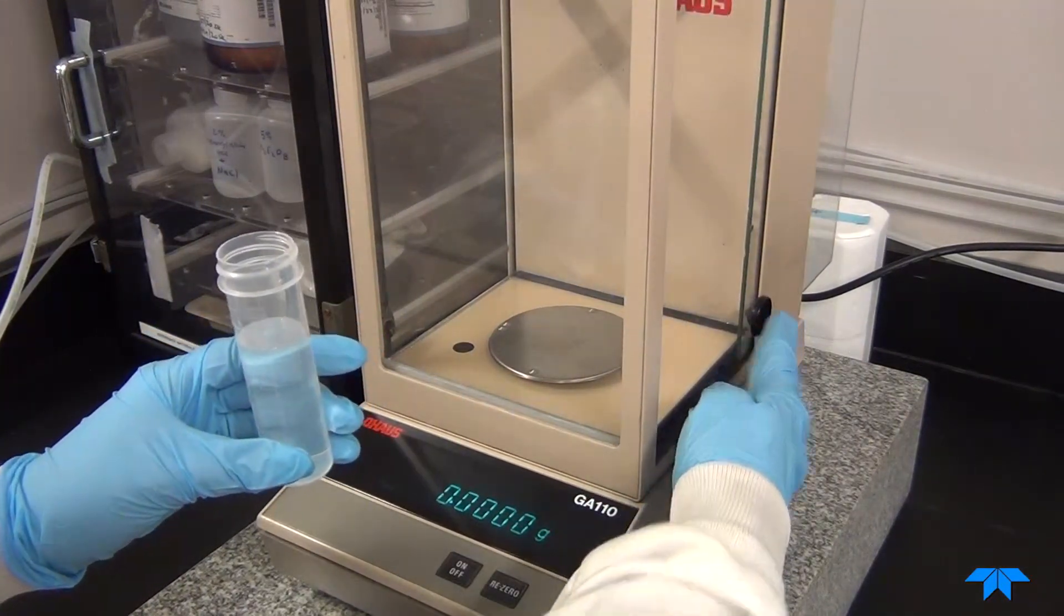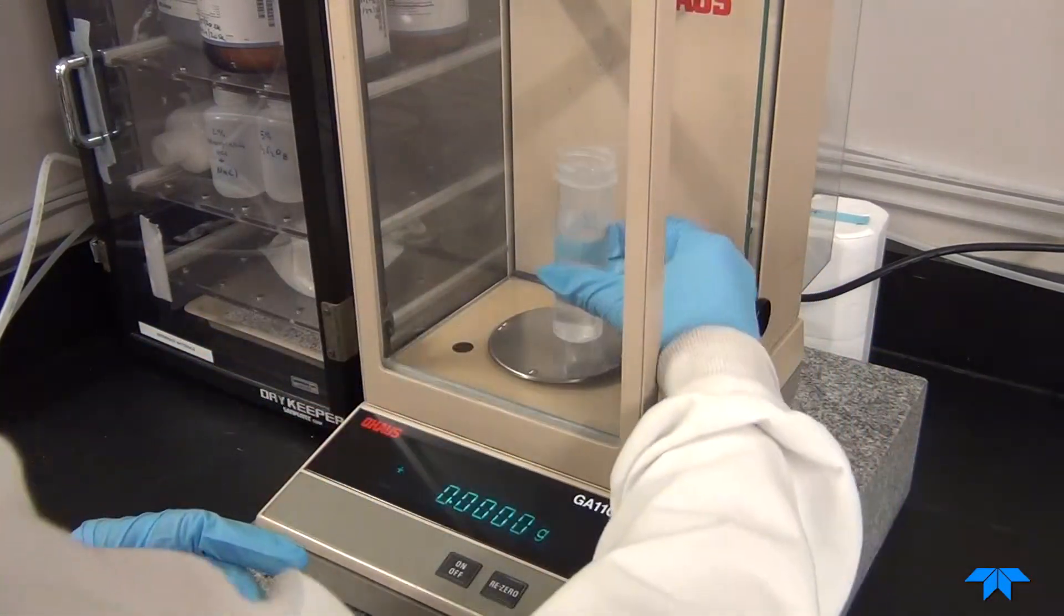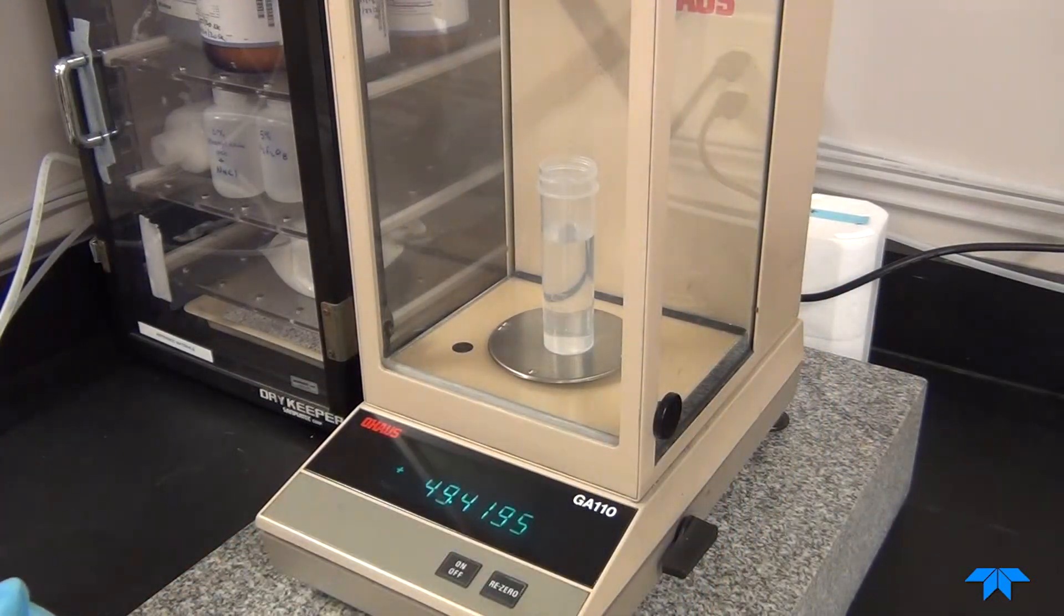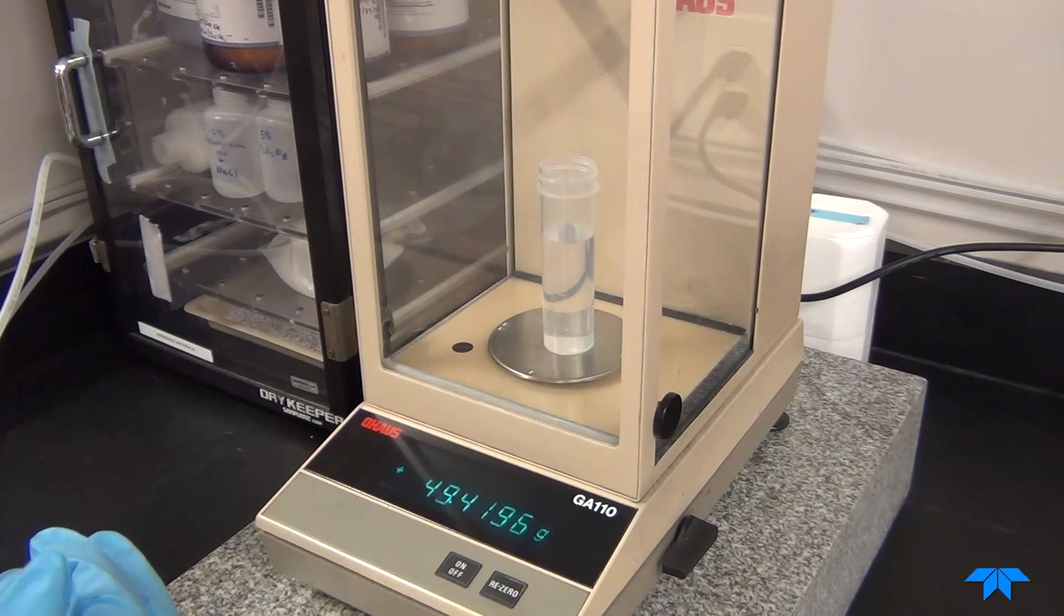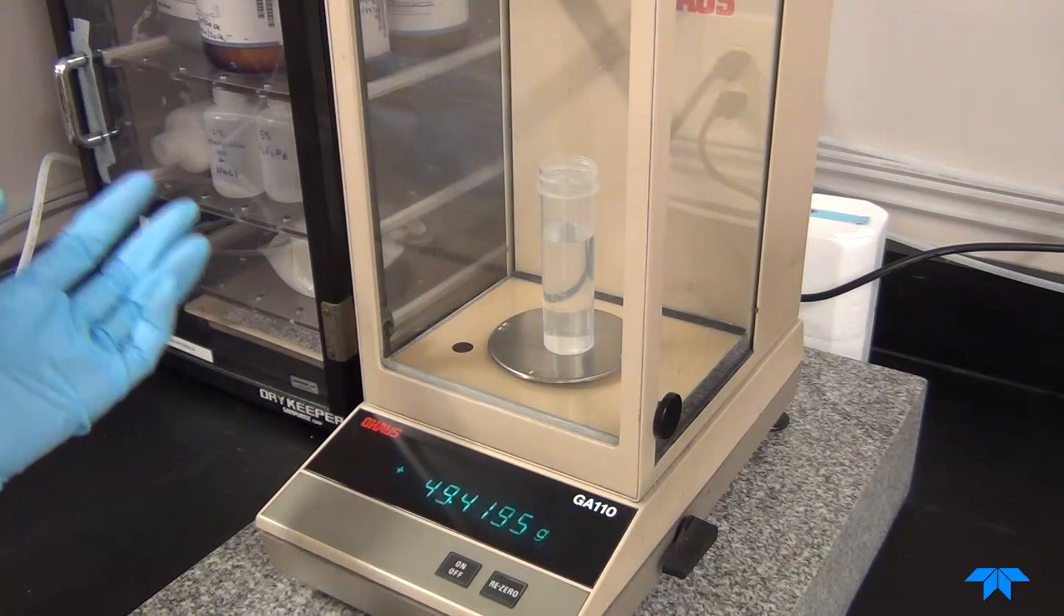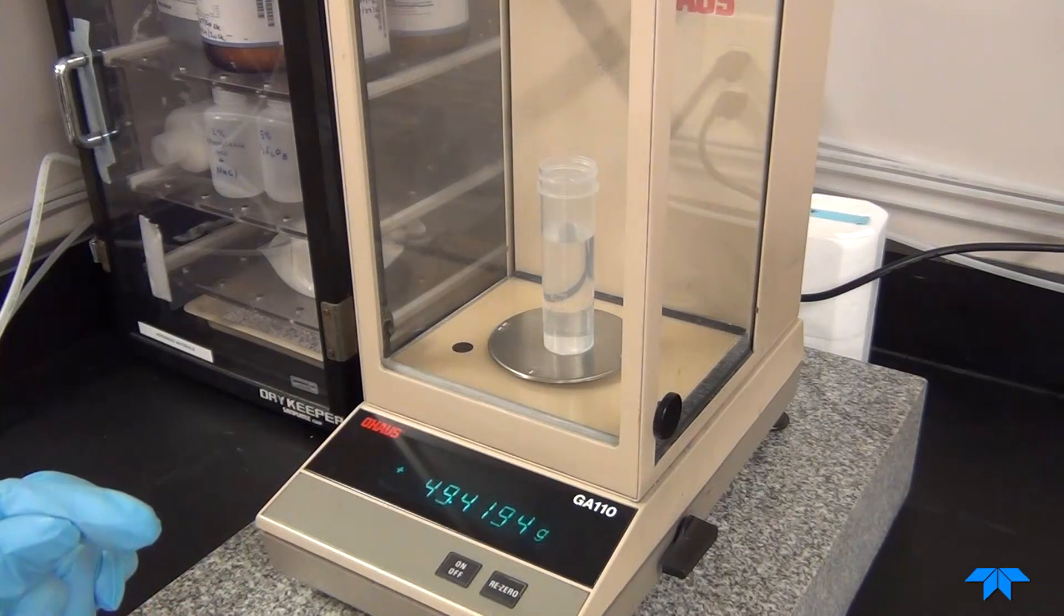Tare the balance, then place the container on the balance, allow it to stabilize, and record the weight of the container. This is the after weight. In our case, it's 49.42 grams.